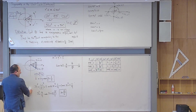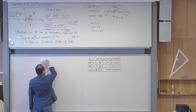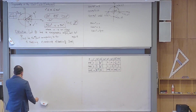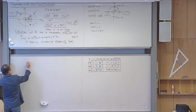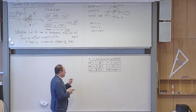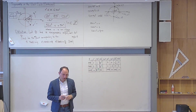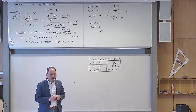Now let me ask you one question. We had trigonometry in the right-angle triangle from before. If I have changed my definition of sine, cosine, and tangent, a good mathematician should be a little worried. We already had a definition for sine, cosine, and tangent for acute angles in a right-angle triangle. You should be curious: are the two definitions consistent?